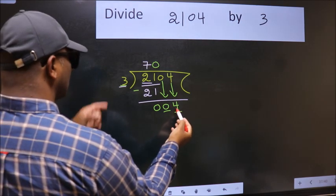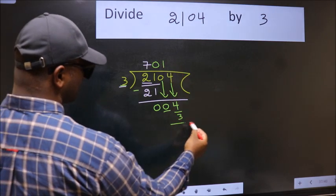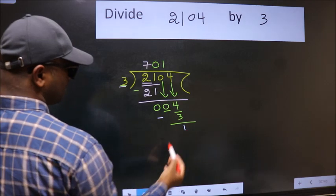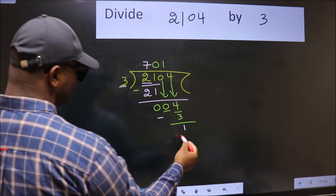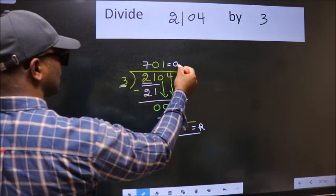A number close to 4 in 3 table is 3 1s 3. Now, we subtract. We get 1. No more numbers to bring it down. So, we stop here. This is our remainder and this is our quotient.